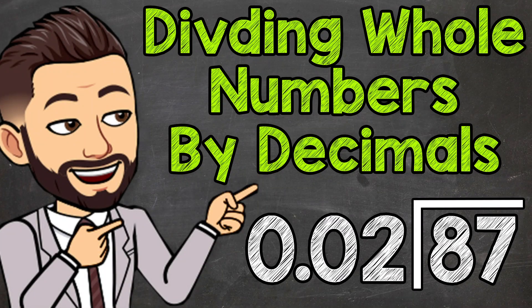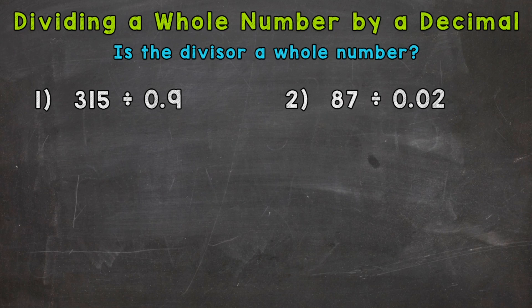Welcome to Math with Mr. J. In this video, I'm going to cover how to divide a whole number by a decimal. So let's jump into our two examples here. For number one, we have 315 divided by 9 tenths.